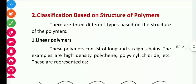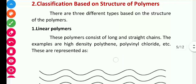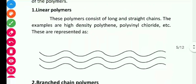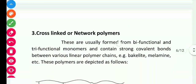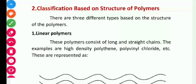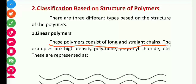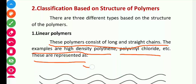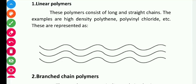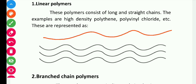Coming to classification based on the structure of the polymer, we can classify polymers into three categories. First, linear polymers — these consist of long, straight chains. Examples are high-density polythene and polyvinyl chloride. As shown in the picture, they have a single long chain. These don't contain any branches, so we call them linear polymers.